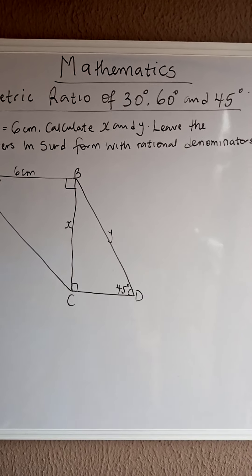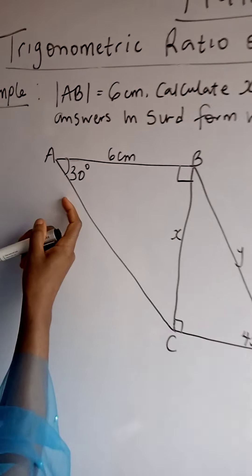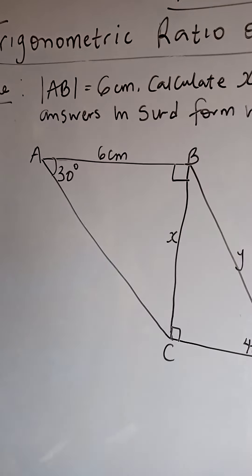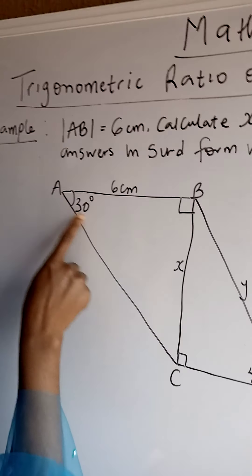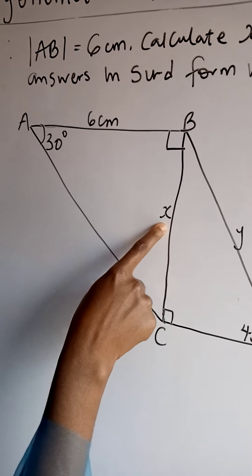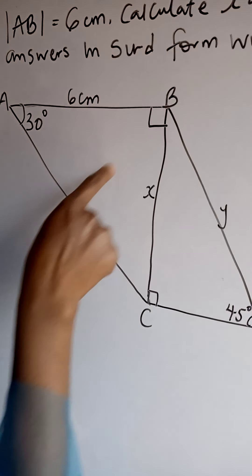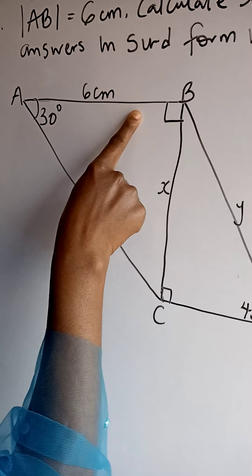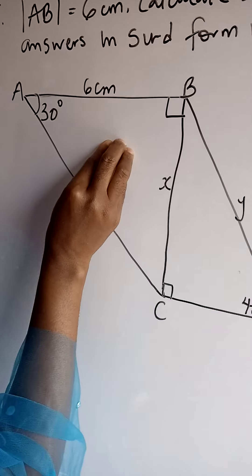We need to interpret this diagram. In this diagram, we are given 30 degrees. The opposite of 30 degrees, which is X, is the opposite side. The opposite angle of 90 degrees is always the hypotenuse, while the other side is the adjacent of 30 degrees.